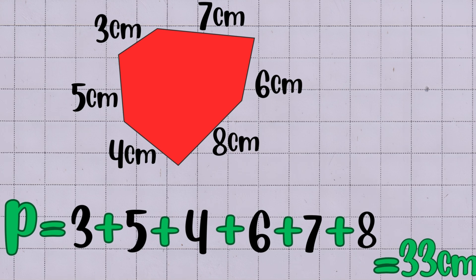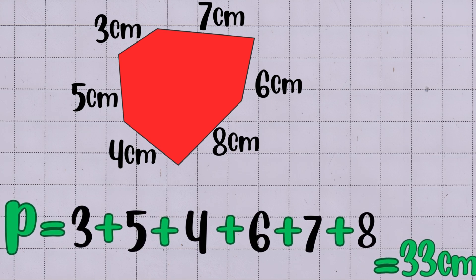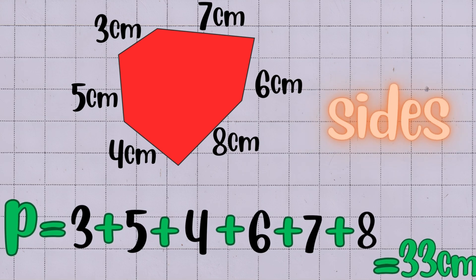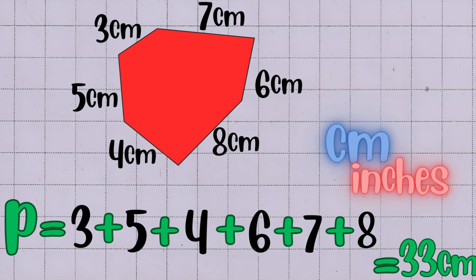No matter what irregular shape you have, the process for finding the perimeter is always the same: add up the lengths of all the sides, and remember to include the unit of measurement like centimeters or inches. That's a wrap for today's lesson. Now you know how to find the perimeter of any irregular shape just by adding up all its sides.